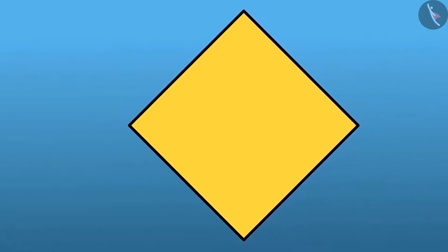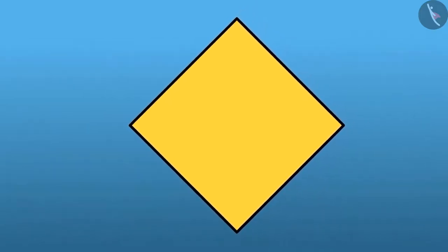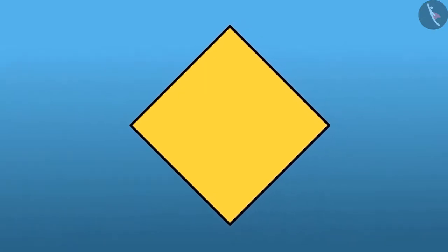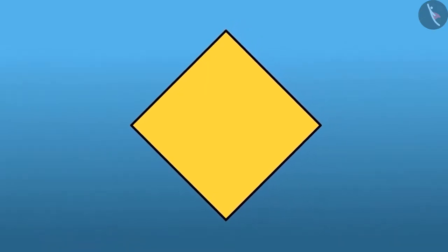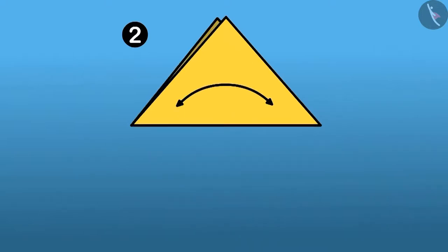Seeing Bholu's excitement, his dad brings a yellow square shaped paper. Children, you can also take a paper and learn from Bholu's dad. For this, firstly you need to take a square shaped paper and make a triangle by folding it at the center. Children, can you find angles here?